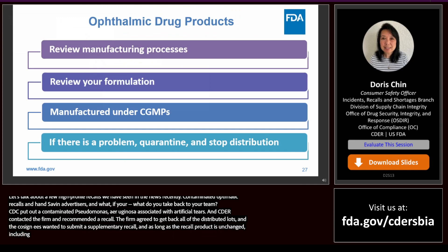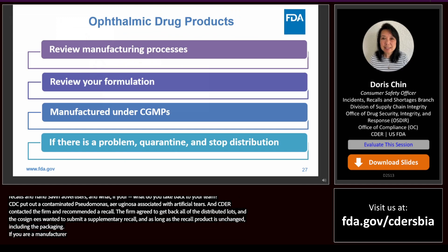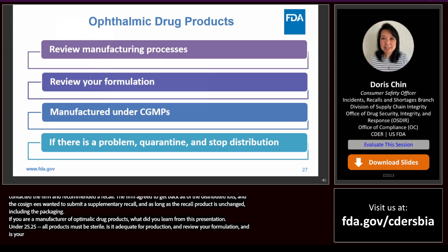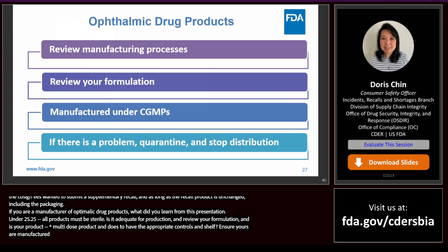If you are a manufacturer of ophthalmic drug products, under 21 CFR 200.50, all ophthalmic drug products must be sterile. Review your manufacturing process to ensure it is adequate for sterile production; review your formulations and container closure systems — whether single-use without a preservative or multi-dose — and ensure appropriate controls to prevent microbial growth throughout its shelf life. Ensure products are manufactured under CGMPs. If you are aware there's a problem, quarantine the products and stop distribution while deciding on an action, and keep the agency informed.